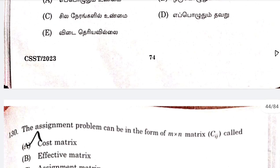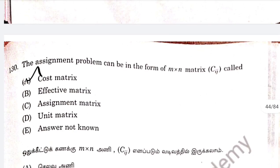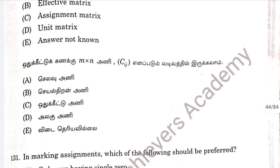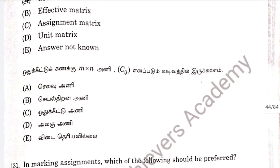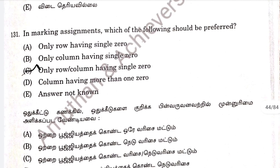Question 129, option E is correct. The assignment problem can be in the form of an M cross N matrix; C sub ij is called the cost matrix. Question 130, option A is correct. Question 131: in a marketing assignment, which of the following should be preferred? Option C — only row or column having a single zero.